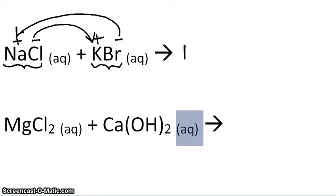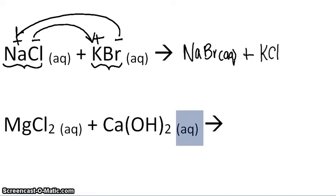So they're going to switch places. We're going to get sodium bromide, and this is all done in aqueous solution, and we're going to get potassium chloride. We have the same number of elements on both sides, so we know the reaction is complete and balanced.